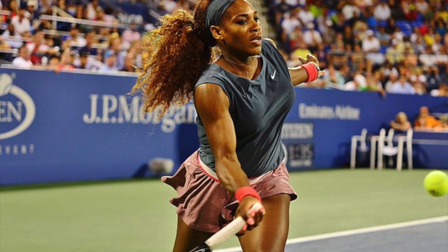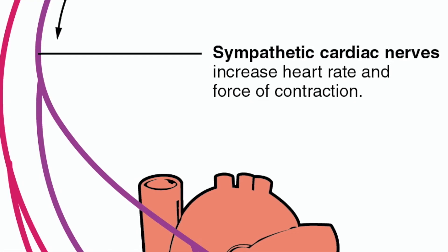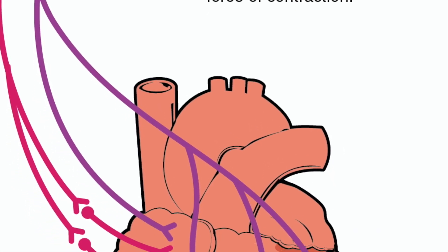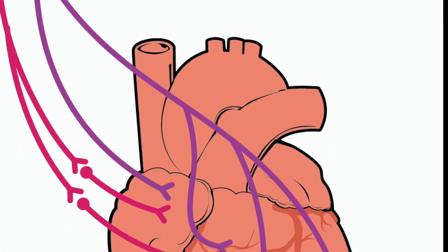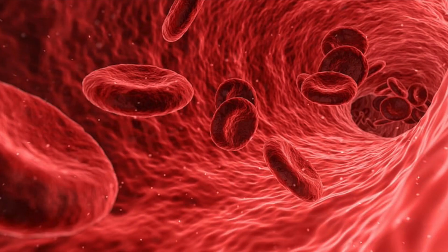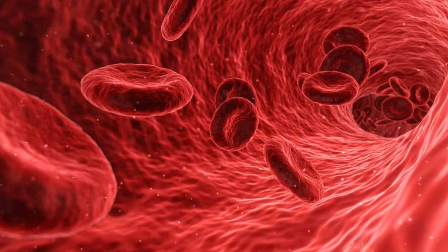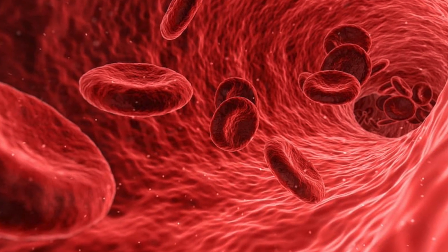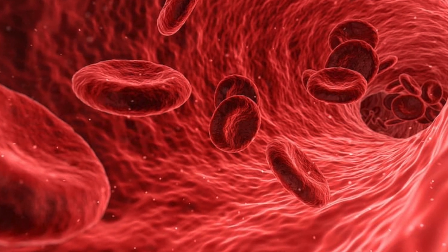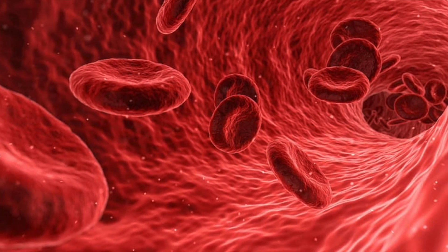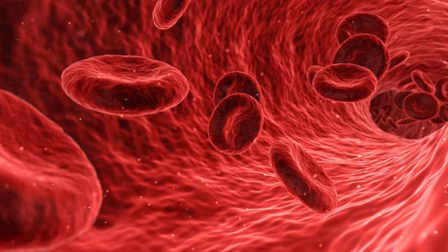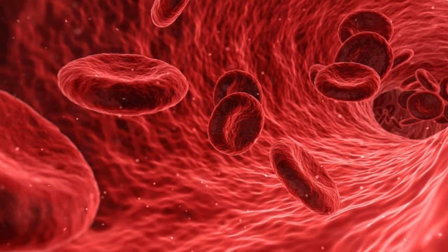When you exercise, one of the first things that will happen is that your heart rate will increase, as the artery supplying blood widens or dilates — the technical term. This increases the blood flow to the muscles and the supply of oxygen and glucose. The rate of carbon dioxide removed from the body is also increased.